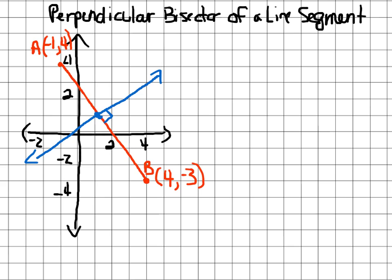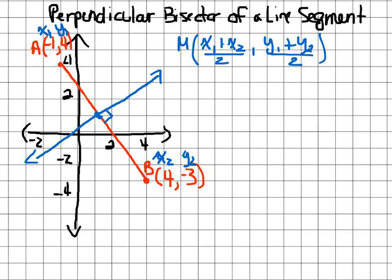If we actually wanted to find that, the first thing we should do is find the midpoint of AB. The midpoint formula is (x1 + x2)/2 and (y1 + y2)/2. Substituting in, I have (-1 + 4)/2 and (4 + (-3))/2.